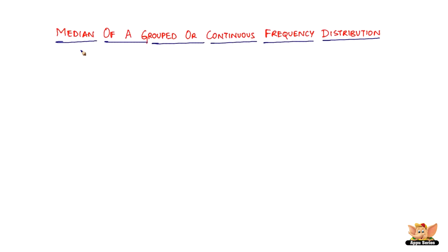In this video, let us look into the median of a grouped or continuous frequency distribution. Till the previous video, we've been looking into the median of random data or just a discrete frequency distribution. So what we're going to do in this video is look into continuous frequency distribution. It's not very different from the previous ones, of course, but there are little changes.